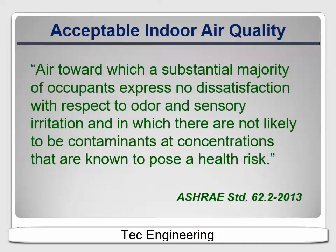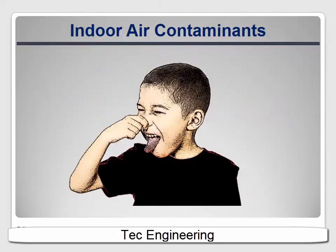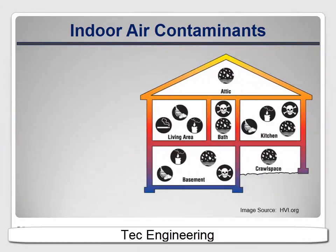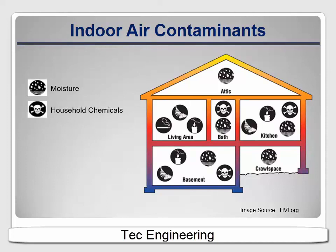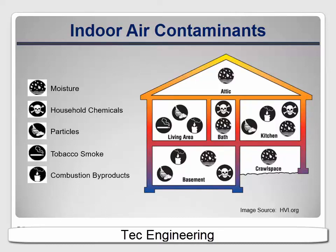But what causes dissatisfaction or irritation, and what are the contaminants that are known to cause a health risk? Indoor air is generally less healthy and more objectionable to the occupants than outdoor air. That's because we add contaminants to it. We add moisture by cooking, bathing, and cleaning, and maybe from roof leaks and groundwater, and we even exhale and perspire moisture into the air. We add household chemicals from cleaning, hobbies, and even off-gassing from furniture. We add dust and other particles like pet dander. And sometimes we add tobacco smoke or combustion byproducts from poorly vented or unvented appliances or from candles burning in the house. These are the things that cause dissatisfaction, irritation, and health risks.